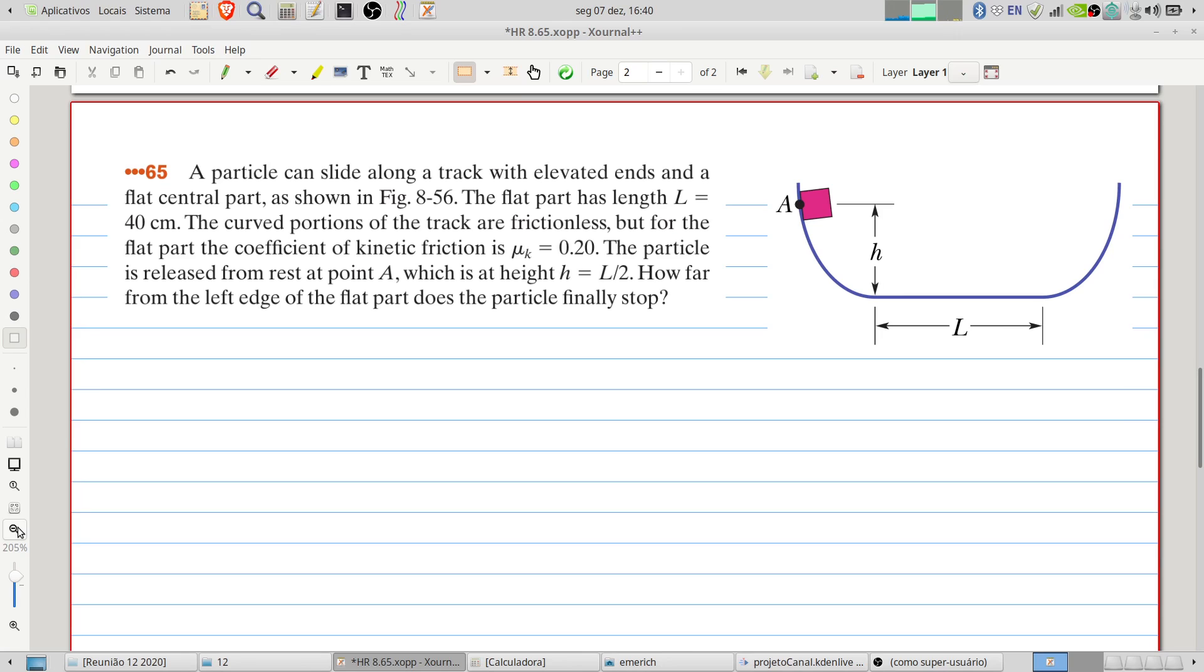Welcome to Problems and Solutions. Today we'll solve problem 65 of chapter 8 of Fundamentals of Physics. A particle can slide along a track with elevated ends and a flat central part as shown in the figure.